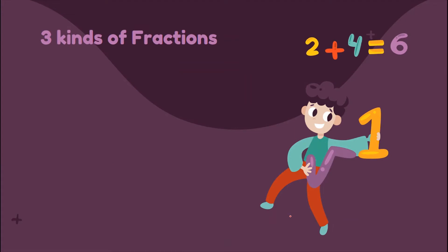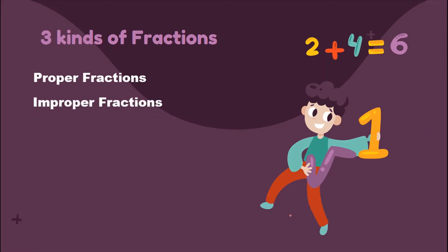In fractions, we have three kinds. Number one, proper fractions. Number two, we call it improper fractions. And lastly, we call that one mixed numbers or mixed fractions. When we say proper fractions, these are fractions wherein the numerator is smaller than the denominator. In improper fractions, the numerator is bigger than the denominator. We have also mixed numbers wherein a mixed number has a whole number and a fraction combined together.